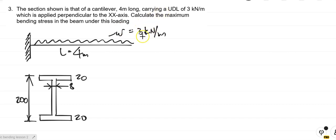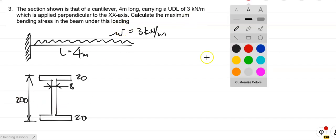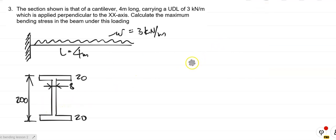Carrying a UDL of 3 kN per meter, which is applied perpendicular to the X-X axis. And of course, the X-X axis, as always, is sitting over there. We know that by now, but I will just put it in. X-X axis, and just calculate the maximum bending stress in the beam under this loading.